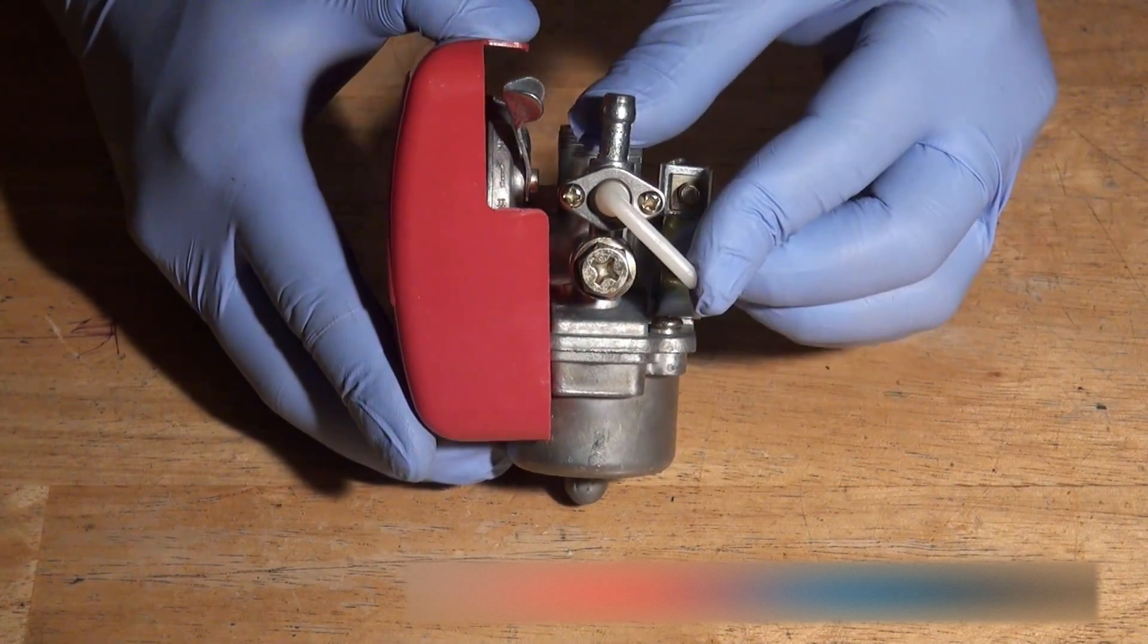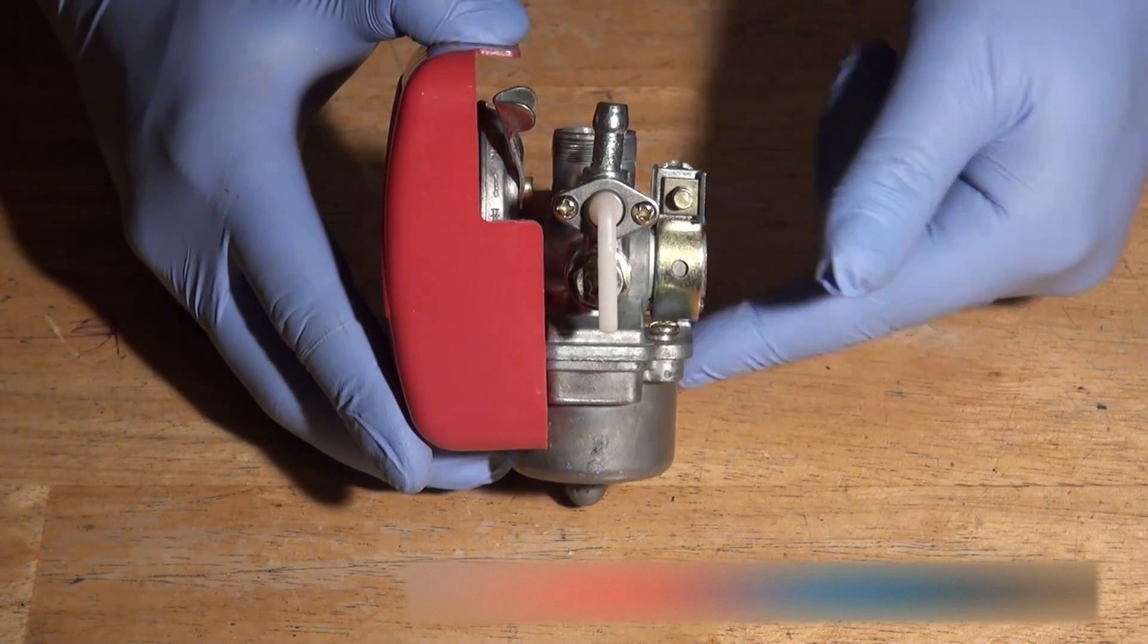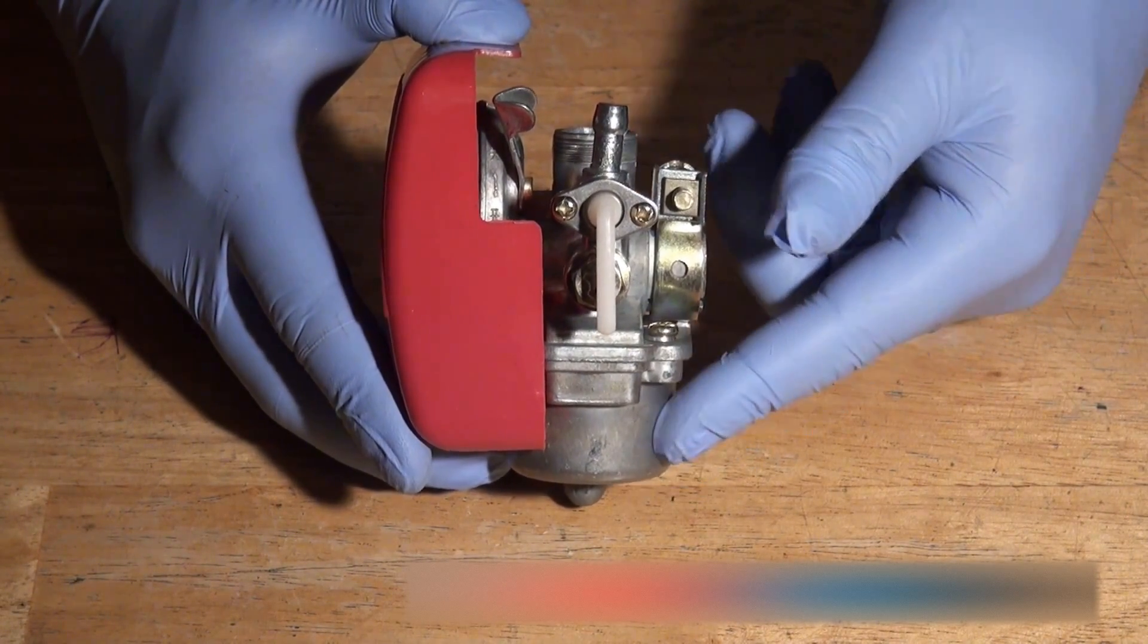So just for demonstration purposes, we'll leave it in this position which means it's open and fuel is getting into the fuel bowl inside the carburetor.